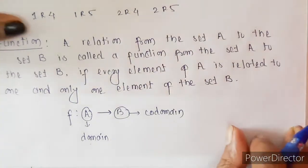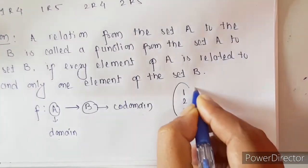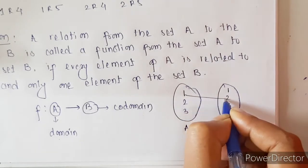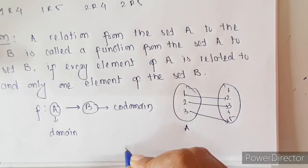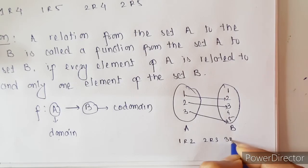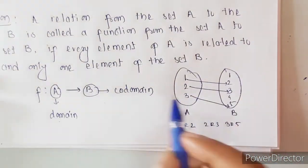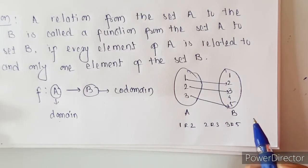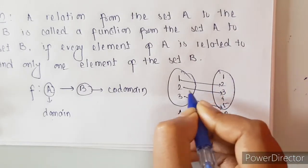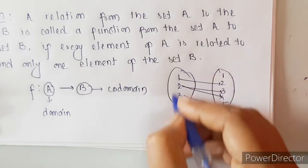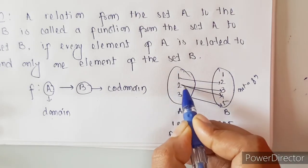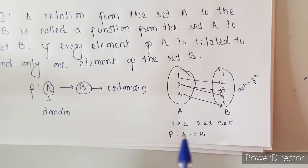It cannot be related to more than one element of B. For example, suppose we have set A = {1, 2, 3} and set B = {1, 2, 3, 4, 5}. Suppose 1 is related to 2, 2 is related to 3, and 3 is related to 5. So every element from set A is related to one and only one element of set B — so we can say f is a function from A to B. But if 2 is also related to 4, then it is not a function. Every element from A must be related to one and only one element of B.